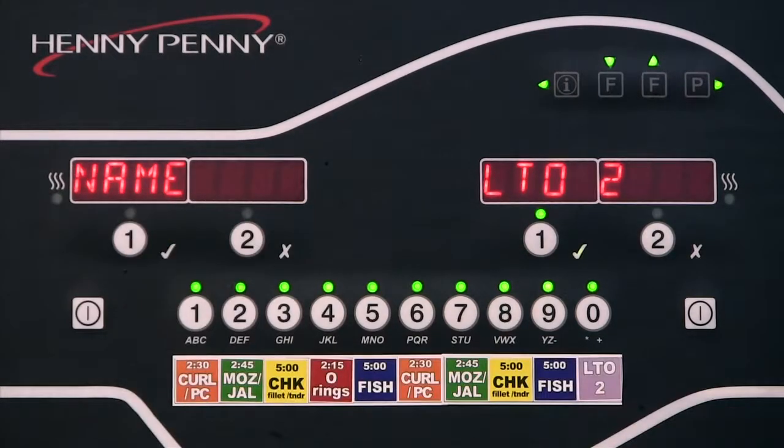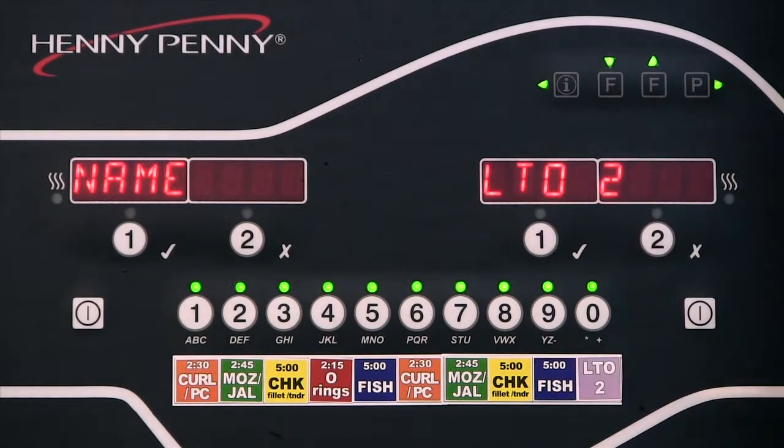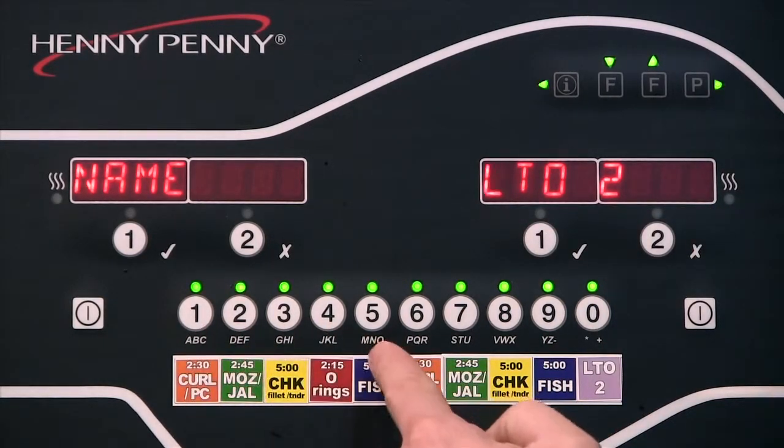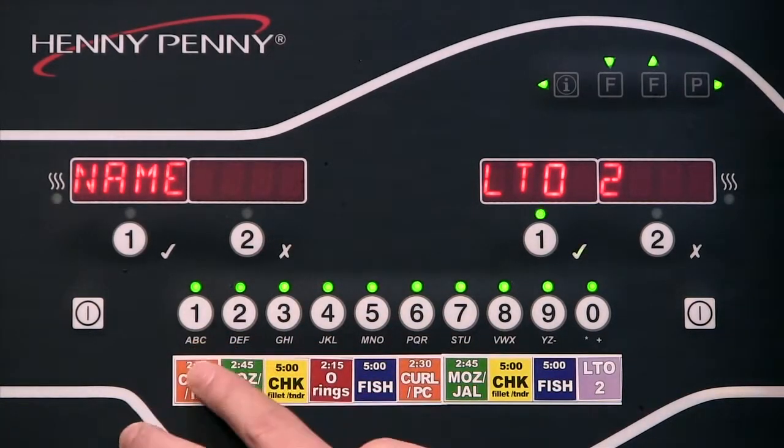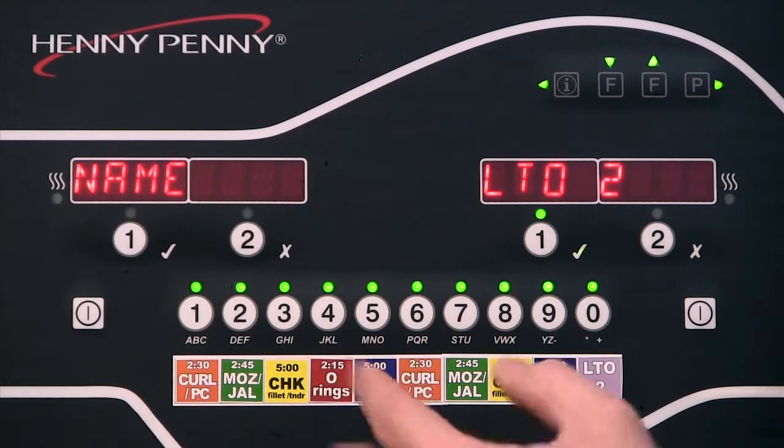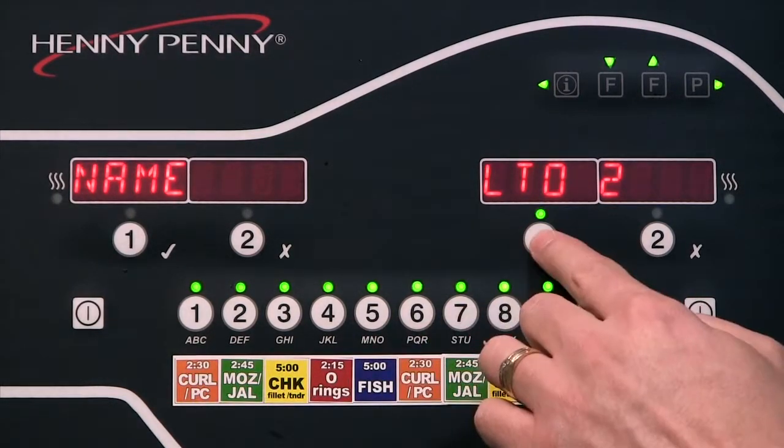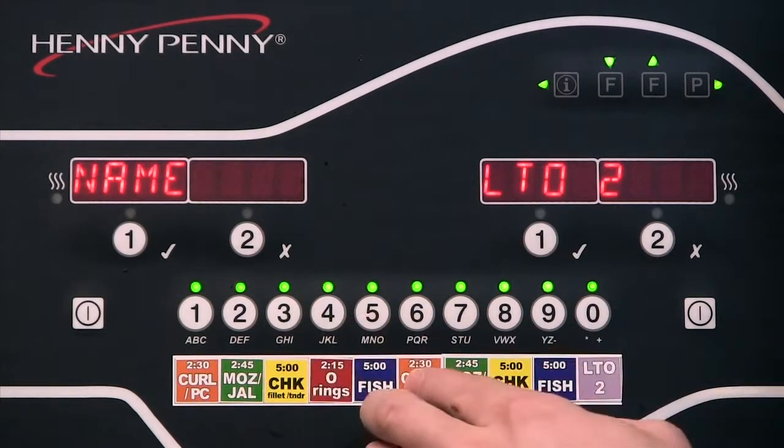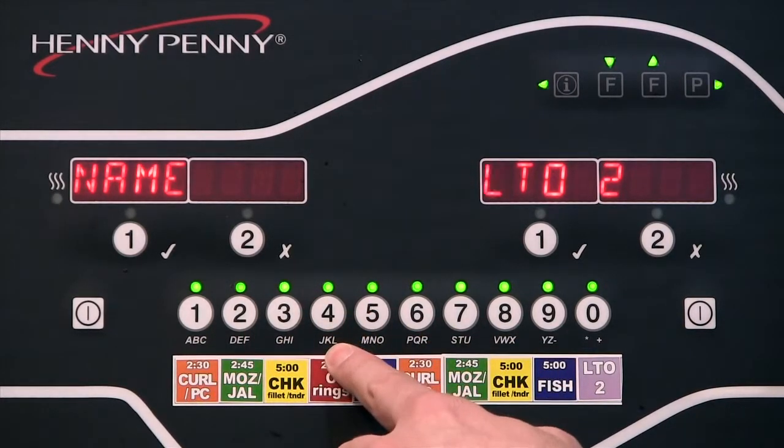So I press the program button, and this is first telling me I can change the name. If I press this check mark button, it's going to start flashing the name, and I would just use the number buttons or product buttons down at the bottom. You'll notice they have letters underneath them. It works like an old touch-tone phone where you had the letters. I'll just cycle the first one here. I'm going to leave it at L, but you can see I can go J, K, L if I continue to press button 4.